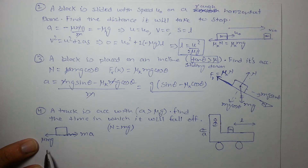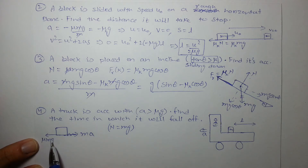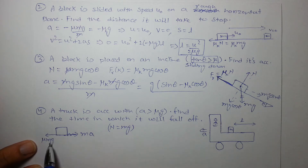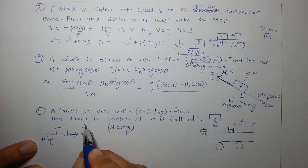Important note: don't make a habit of putting friction as μmg. Friction is not always μmg — it is μN (or μk·N for kinetic friction). In most cases N equals mg, which is why we write μmg, but always remember friction = μk·N.